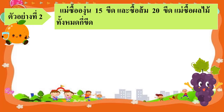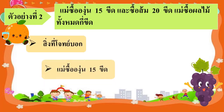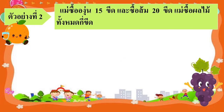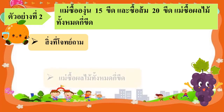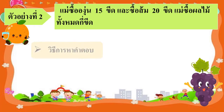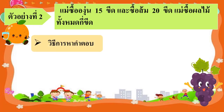จากโจทย์ เราสามารถบอกได้ว่า สิ่งที่โจทย์บอกคือ แม่ซื้ออังุ่น 15 ขีด และซื้อส้ม 20 ขีด สิ่งที่โจทย์ถามคือ แม่ซื้อผลไม้ทั้งหมดกี่ขีด วิธีการหาคำตอบ แม่ซื้อผลไม้ทั้งหมด ดังนั้นจึงใช้วิธีการบวกนั่นเอง